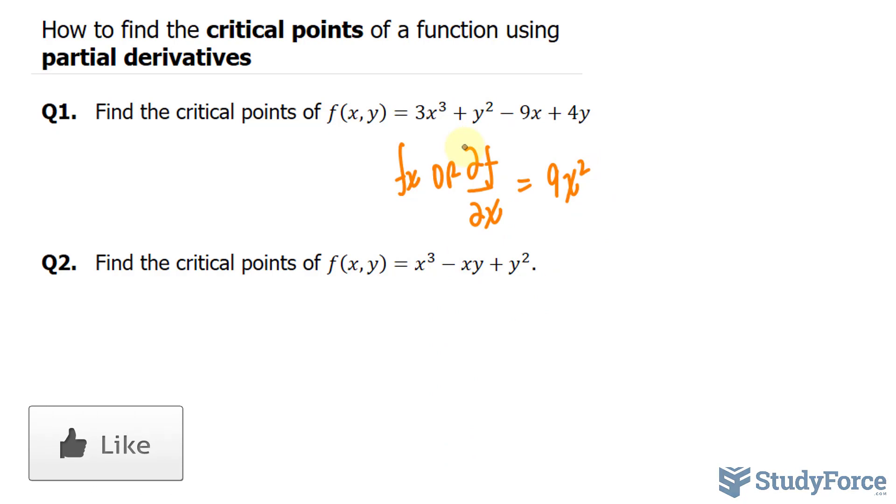This is considered a constant, that's 0. This becomes negative 9, and that's also considered a constant. So eventually, we'll set this equal to 0 and solve for x.